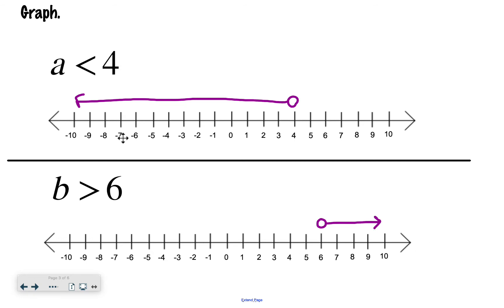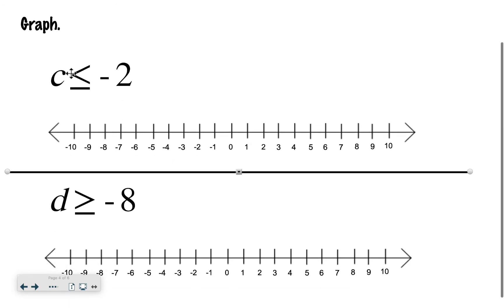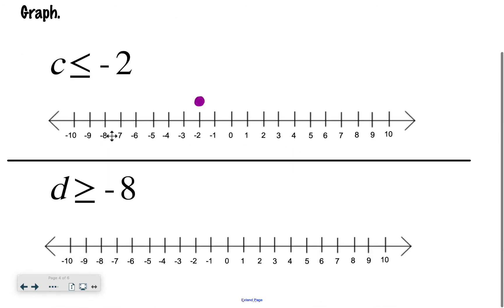Then if we have something where it's like c is less than or equal to, you do what's called a closed circle or a filled in circle. Notice on the last one we did open circles where we didn't color it in, and now that we have the or equal to, we do a filled in circle.